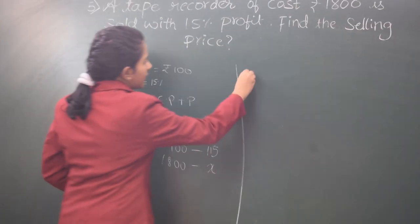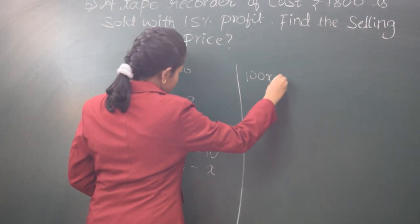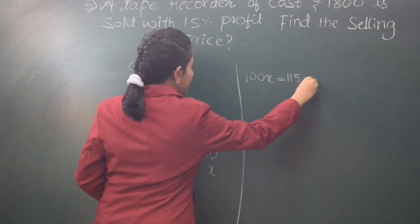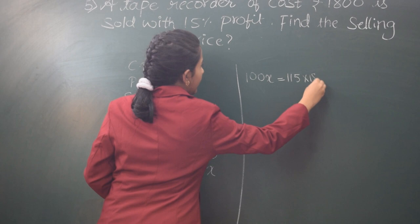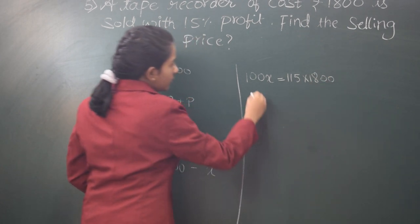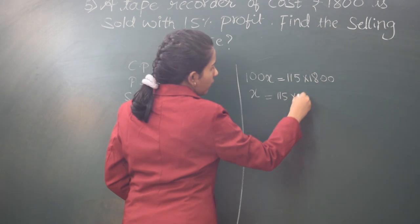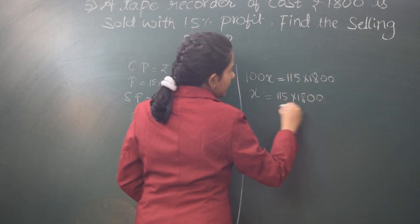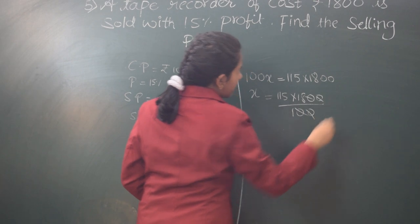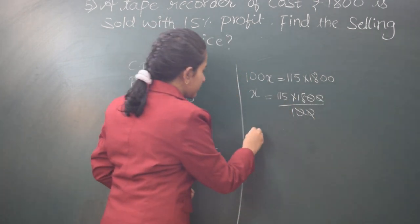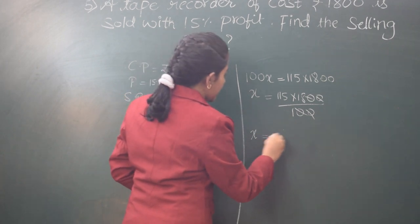100 into X, that will be 100X. X is equal to 115 into 1800 divided by 100. We can cancel the zeros and multiply 115 with 18 to get the value of the selling price.